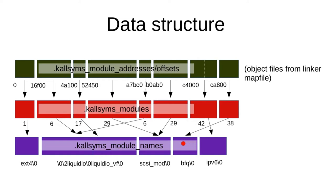I'm getting a lot of pushback saying this slows down the build. Even with -j1, the build is less than a tenth of a second slower. I don't see the problem. So I'm putting it back in. It's true that it's not needed for anything else in the kernel anymore, but you do need it for this.